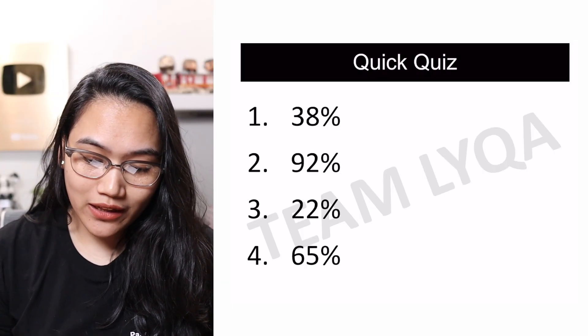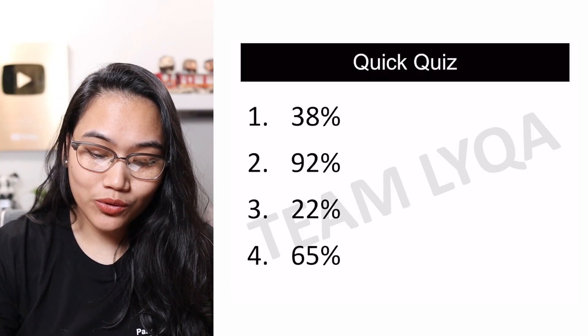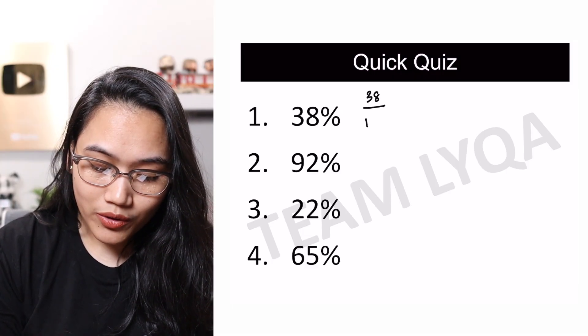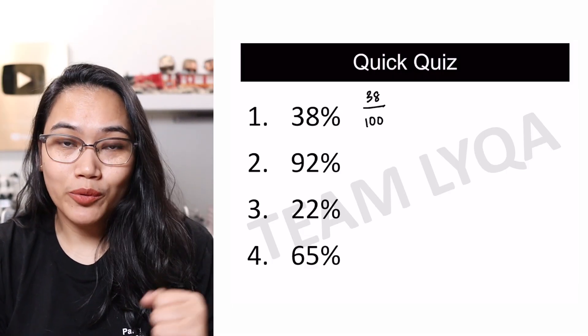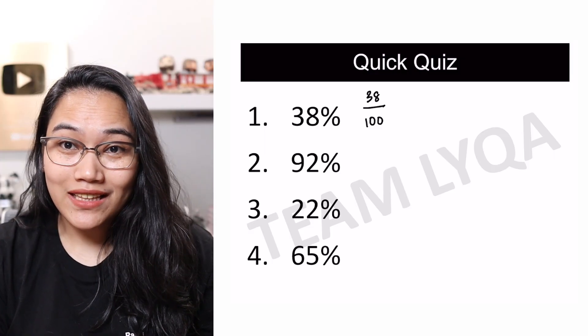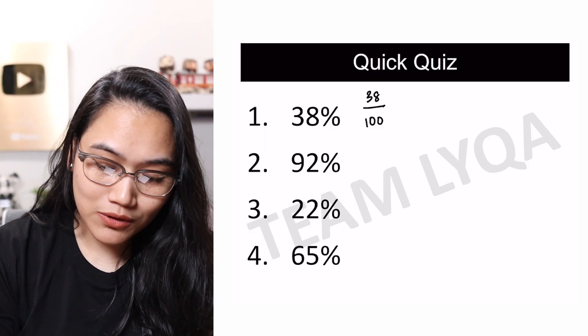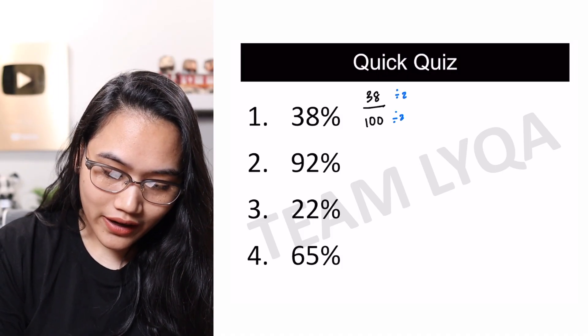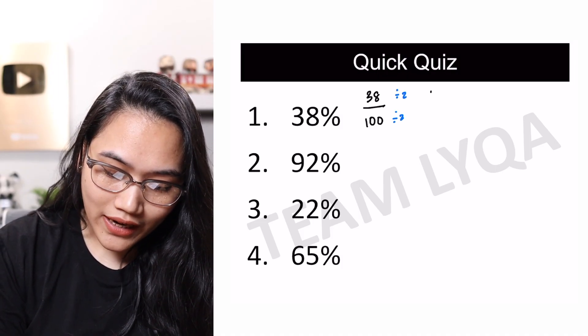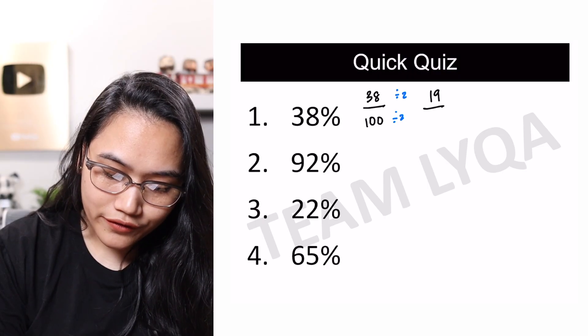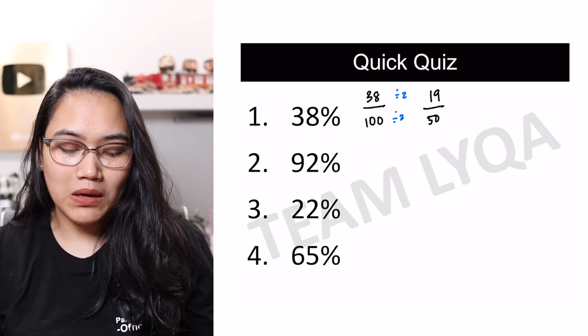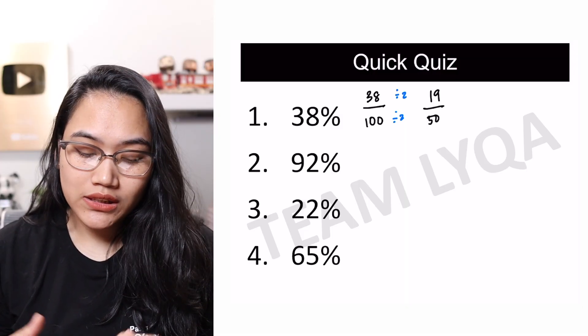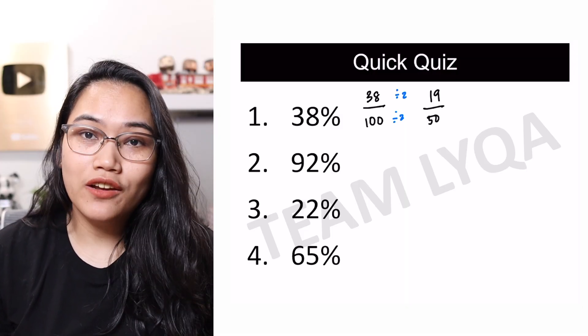Let's start with the first question, 38%. So again, we're going to do the same thing we did earlier. 38 over 100, percent means per 100. Now, can we make it smaller? Yes, they're both divisible by 2. So let me just divide this by 2. And we get 19 over 50. Now, the question would be, can I do anything more here? Is it divisible by any common number? The answer would be no. So that's our final answer.